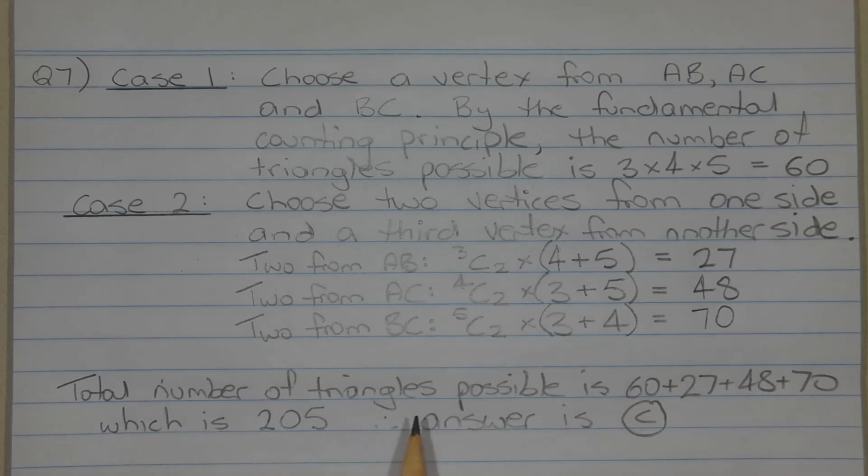The total number of triangles possible is 60 plus 27 plus 48 plus 70, which is 205. Therefore, the answer is option C.